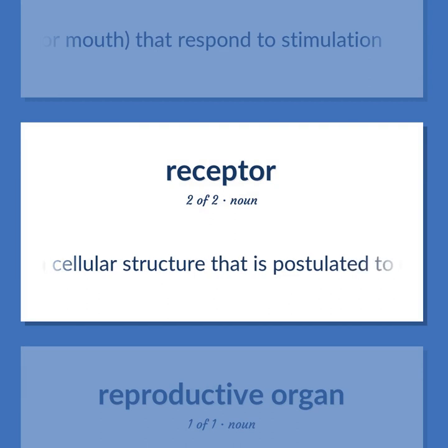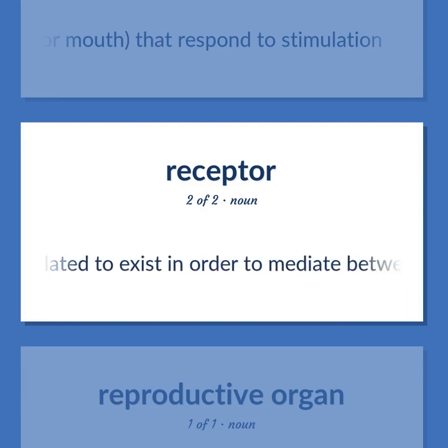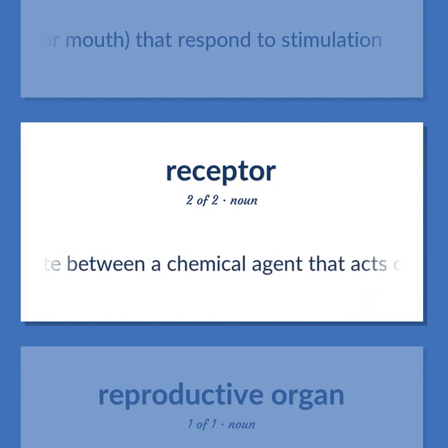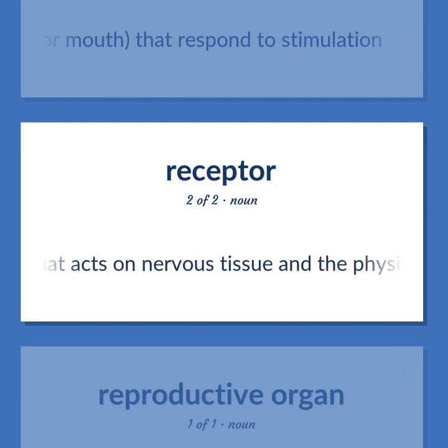A cellular structure that is postulated to exist in order to mediate between a chemical agent that acts on nervous tissue and the physiological response.